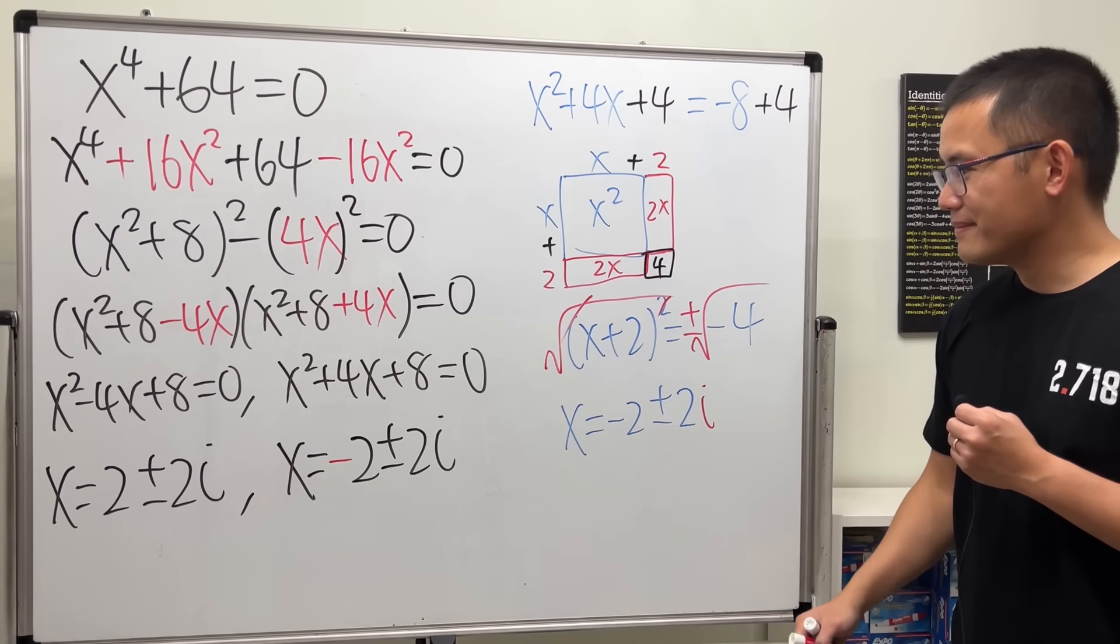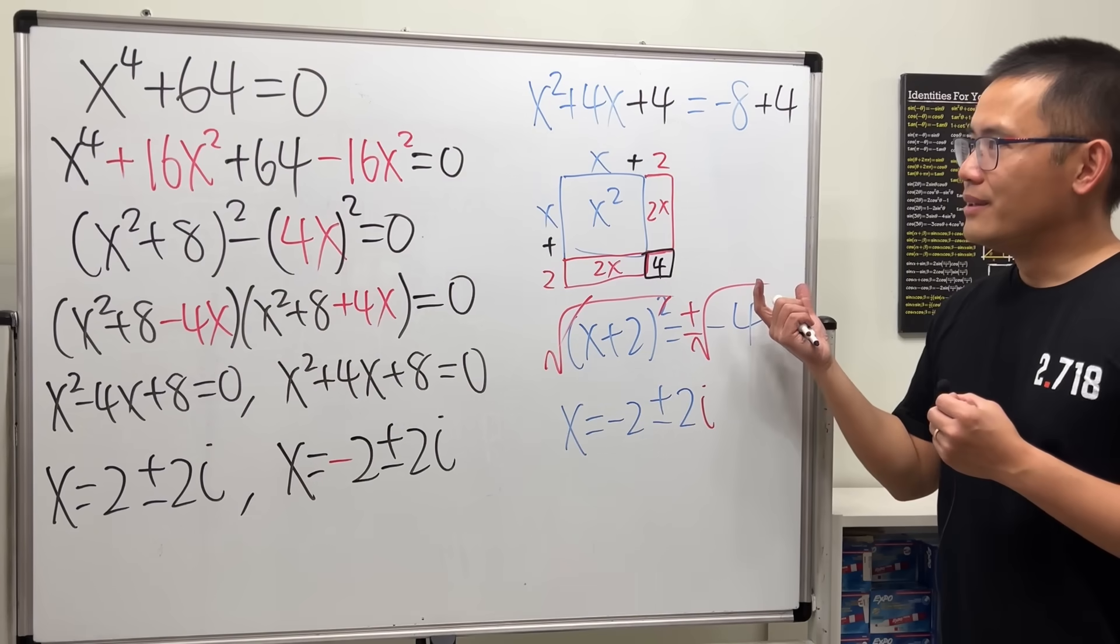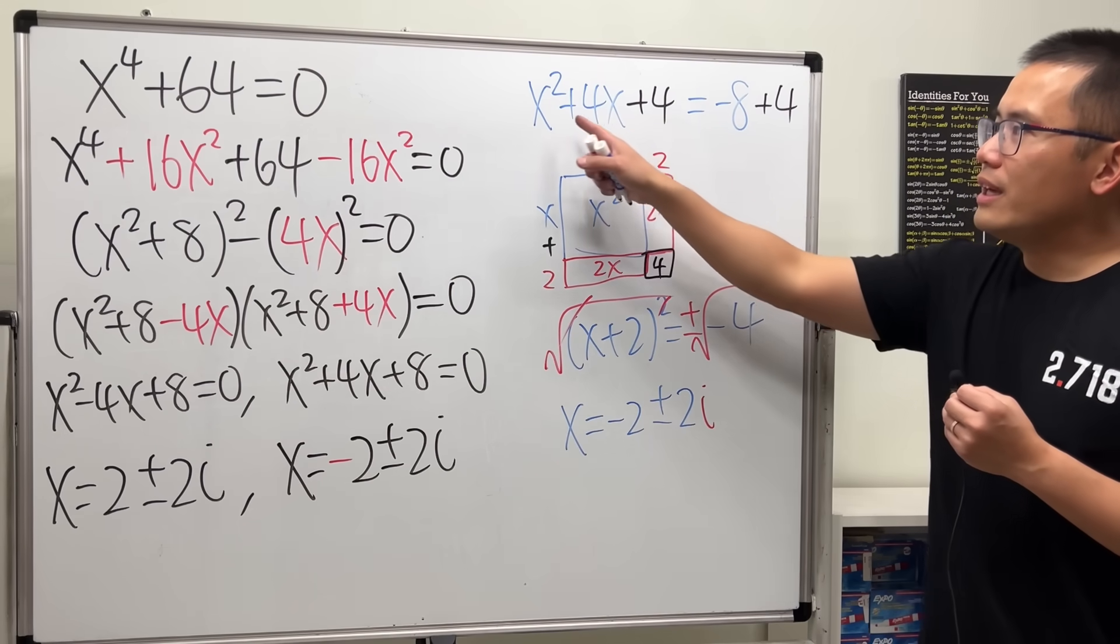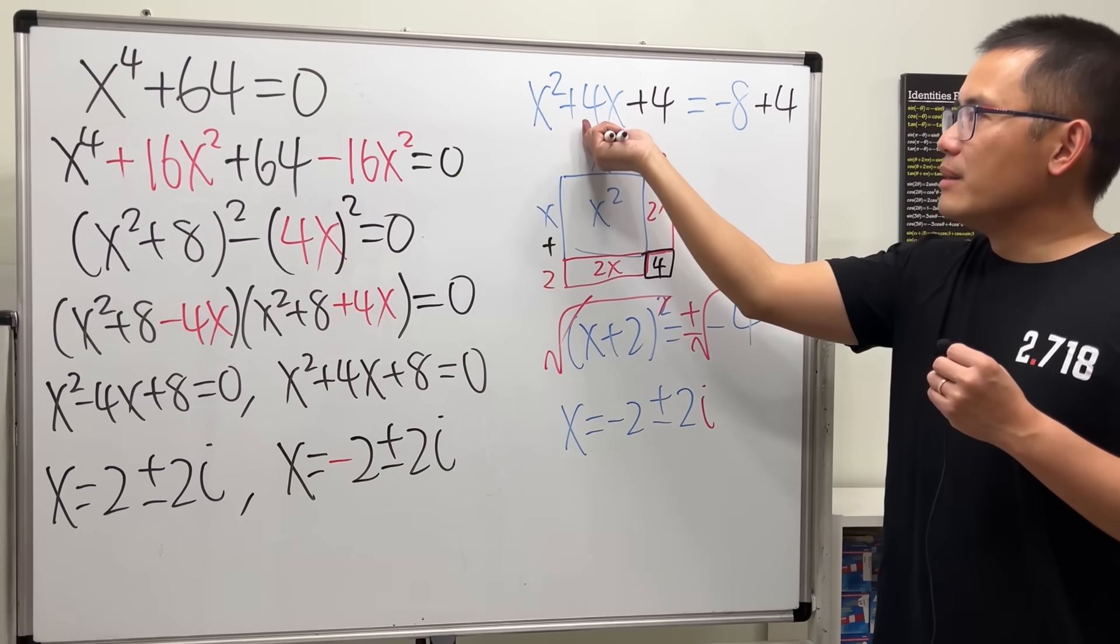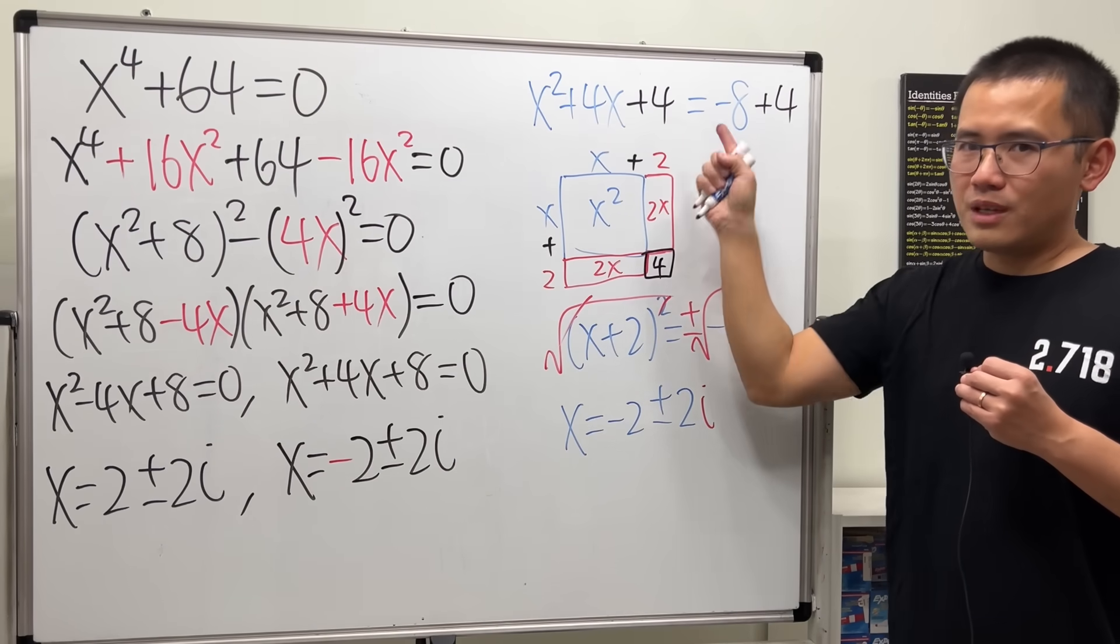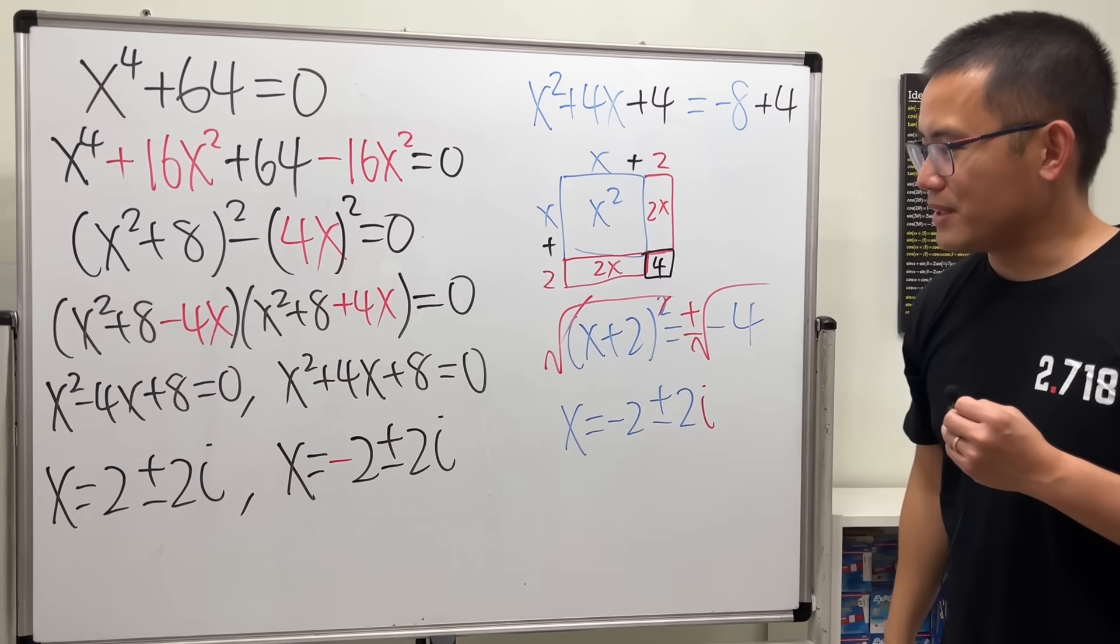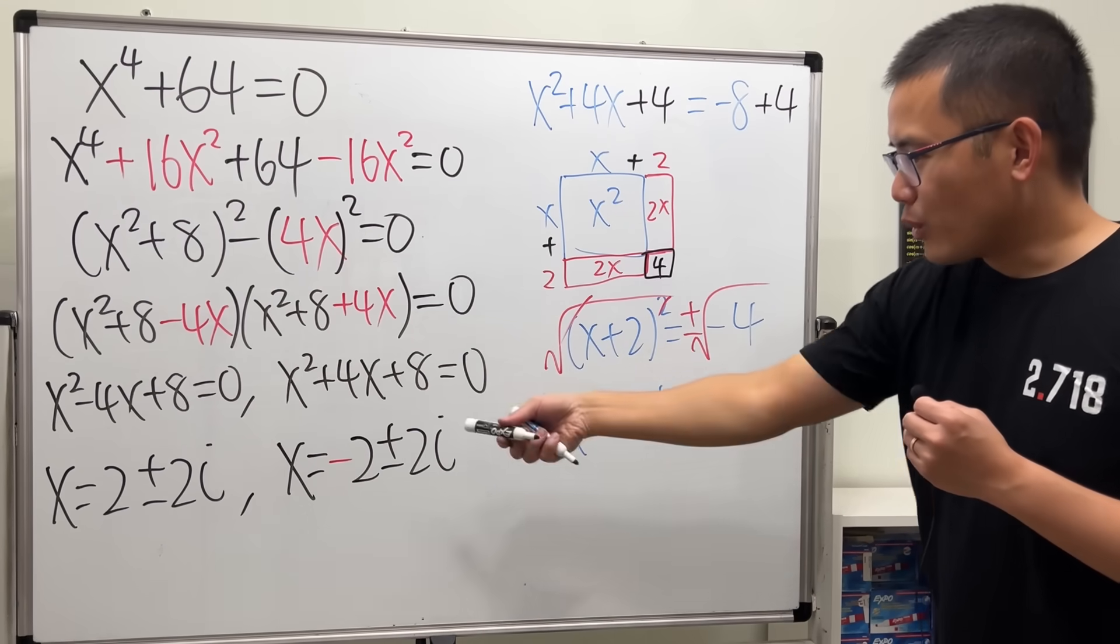Here, we have the i. And, in my opinion, completing the square is better whenever you have a 1 in front of the x squared already. And, the middle coefficient is even. Completing the square is much better. And, that's what we have.